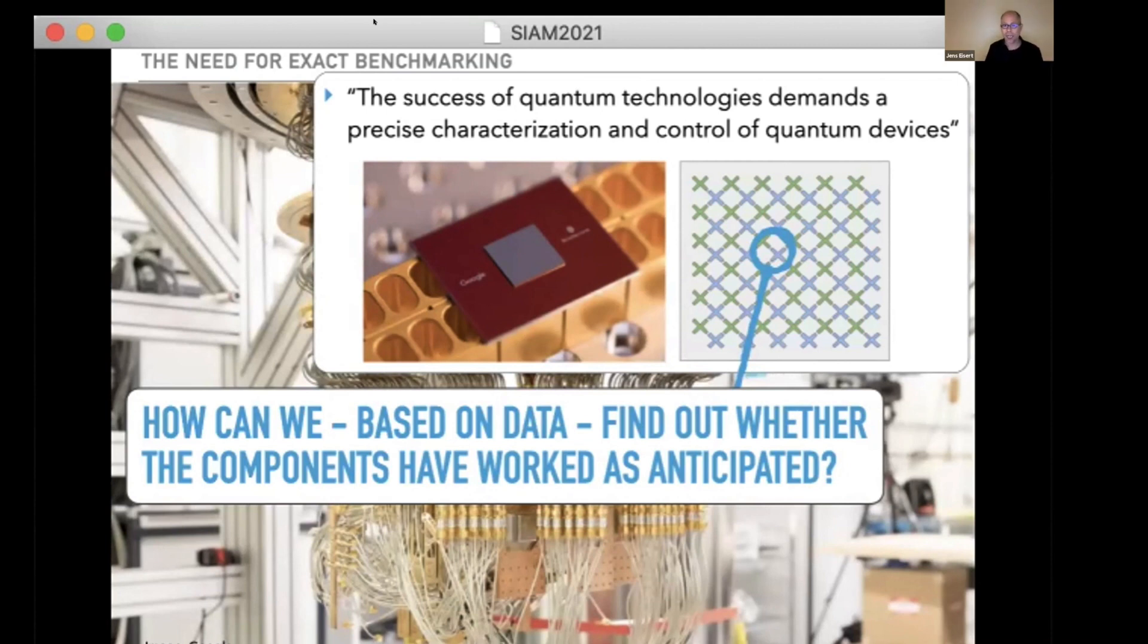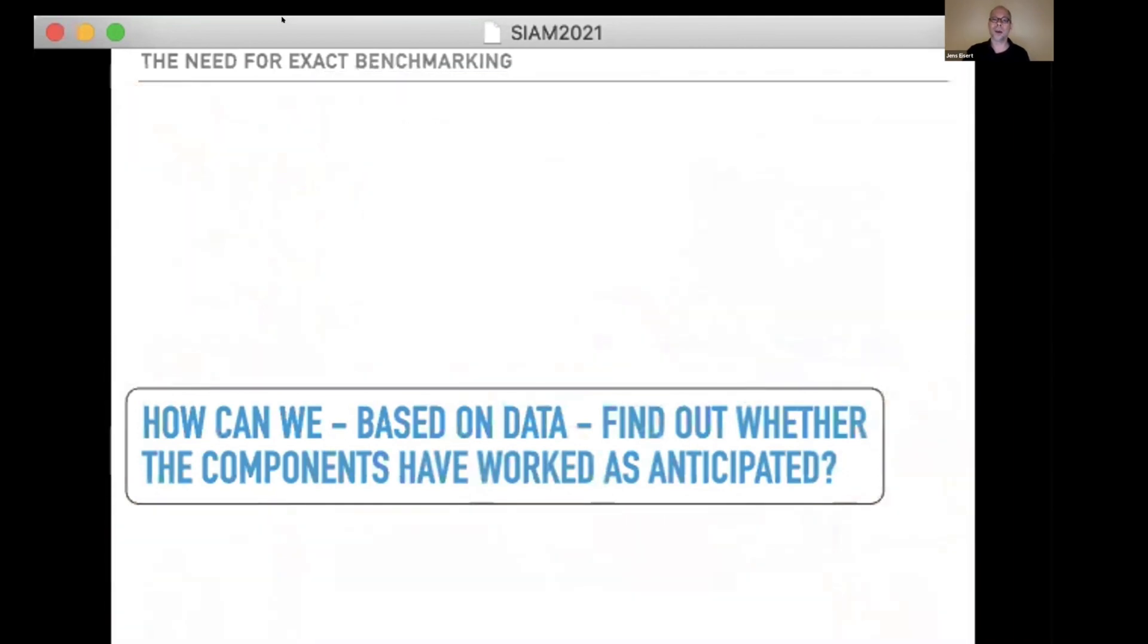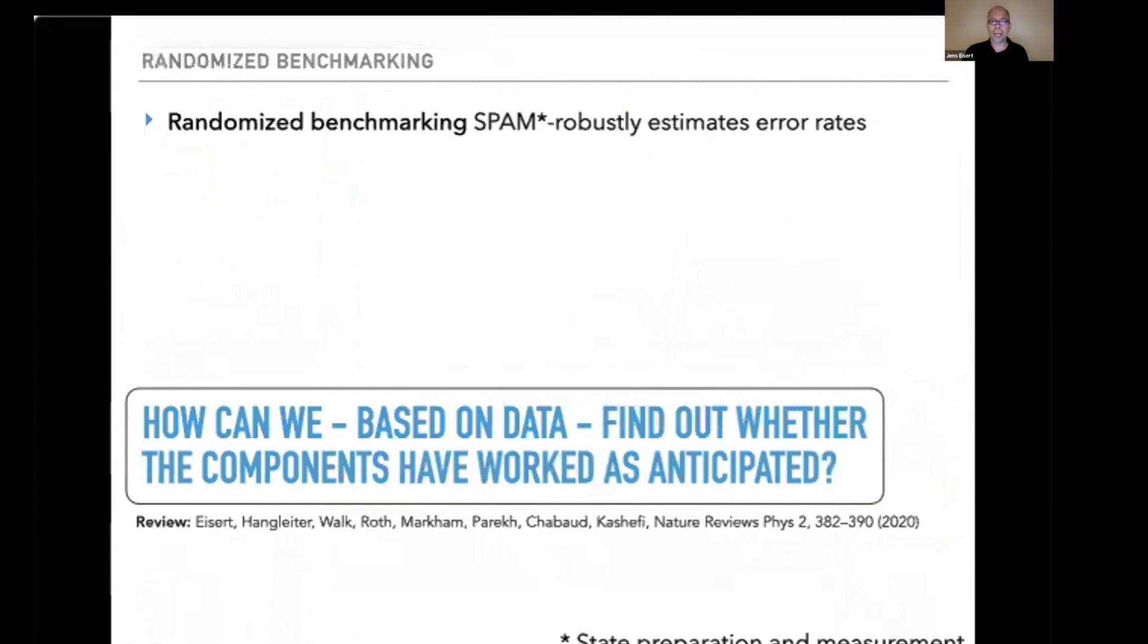The overwhelming answer is: please do randomized benchmarking. Randomized benchmarking robustly estimates error rates. When you read fidelities or gate-like quantities of quantum gates in papers, this is commonly what people have done. It's the plain vanilla scheme, ubiquitous to say the least. There are literally hundreds of papers on the subject and we've just written a review on data-driven benchmarking and certification.